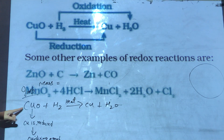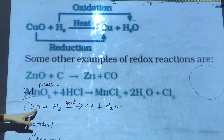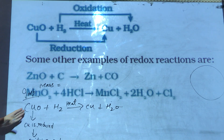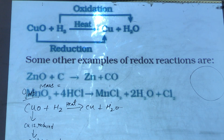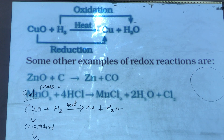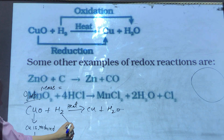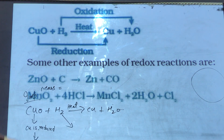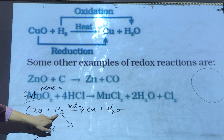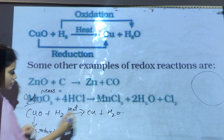So CuO is reduced and since it has given its oxygen to some other element, we will say that it is an oxidizing agent. Now here also you can clearly see that H₂, hydrogen, has gained oxygen.